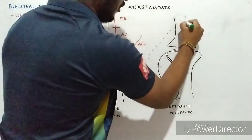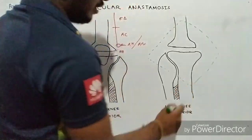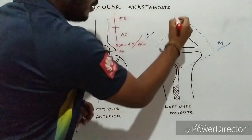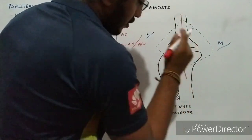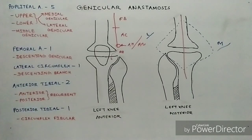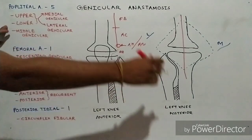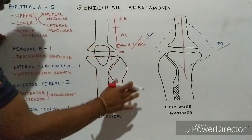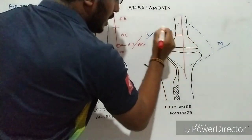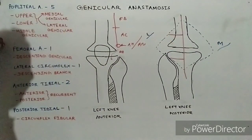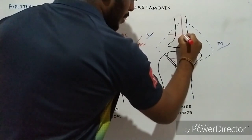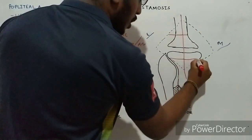it goes through a space called the popliteal fossa, which is a diamond-shaped space in the posterior aspect of the knee. Within the popliteal fossa it gives its five genicular branches. On the lateral side it gives a pair of branches: lateral upper genicular and lateral lower genicular. On the medial side there are two branches: upper medial genicular and lower medial genicular.